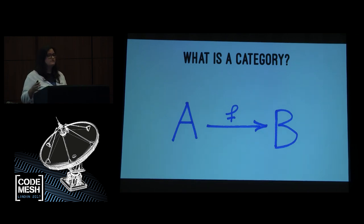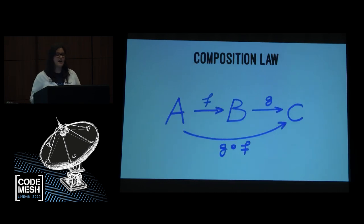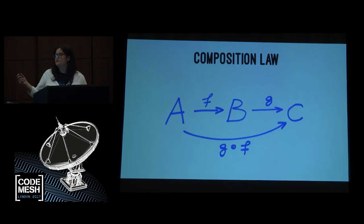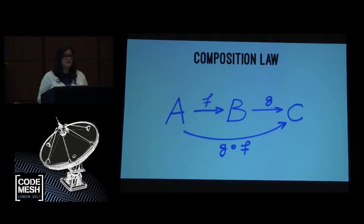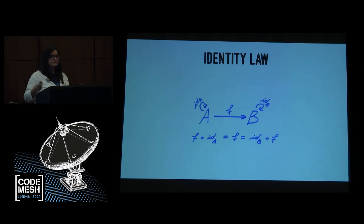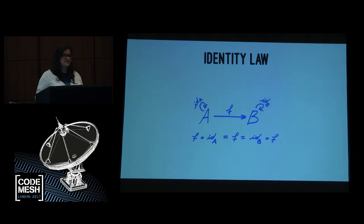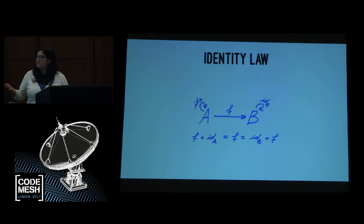We have a few rules that will drive our game. The first rule is composition — if I have an arrow that goes from A to B, and then I have an arrow that goes from B to C, then I know I can automatically create a new arrow called G after F. The other law is the identity law, which means it's an arrow that starts and returns at the same point. And obviously when we compose it, it doesn't really change the result.